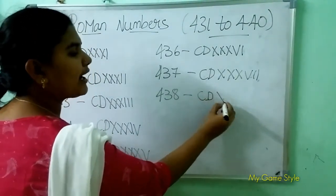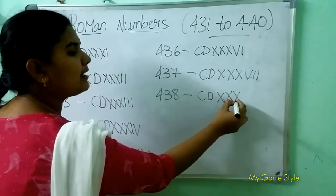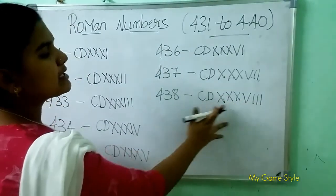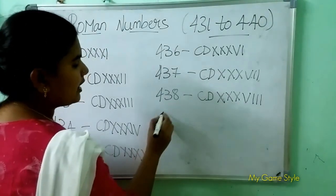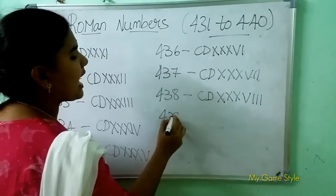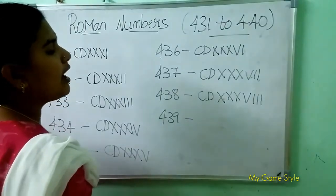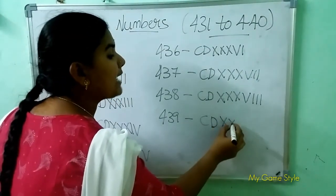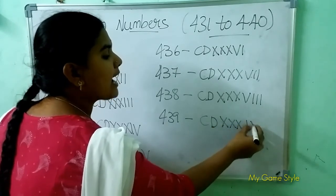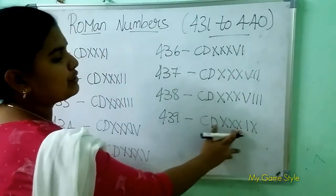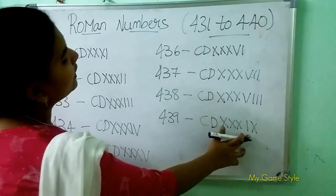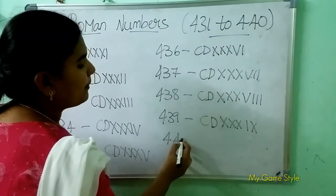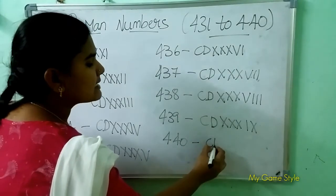Next, 438 — how to write 438? CD is 400, triple X is 30, VIII (V triple I) is 8. So this means 438. Next, 439 — CD is 400, triple X is 30.